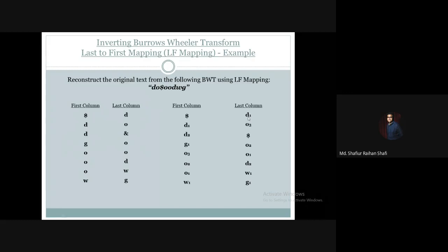In the last column, the first O is O1 and the third occurrence is O2. In the last column, the third element maps to O2, and D2 is also identified. Now we start with the mapping. We start from the first column's first row, which is the dollar sign. The first row of the first column is dollar, and it corresponds to the last column element D1.